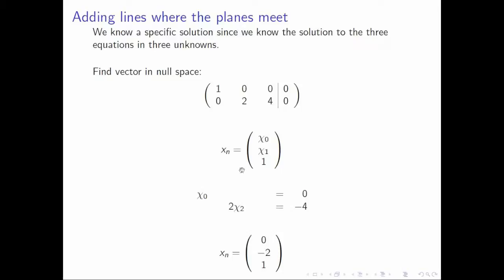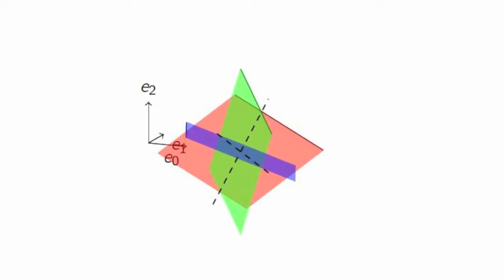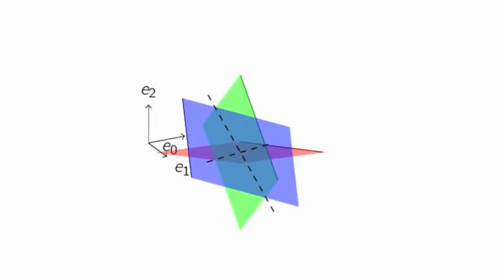That gives us this right here. And then I have this vector that maps to zero, and therefore any multiple of that vector maps to zero. And that then helps me define a line where the blue and the green plane intersect.